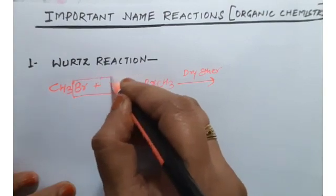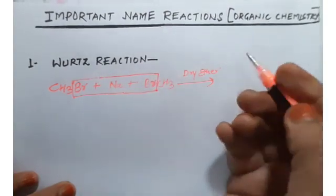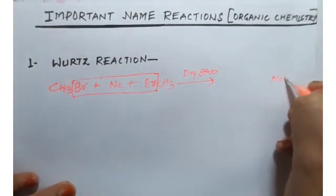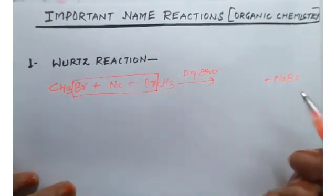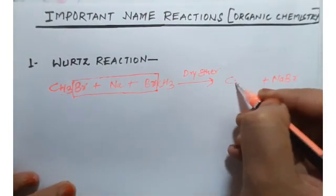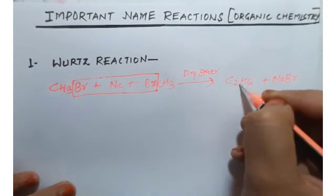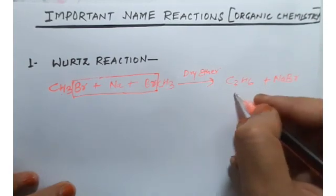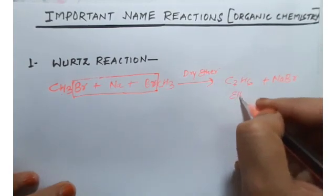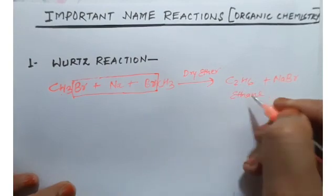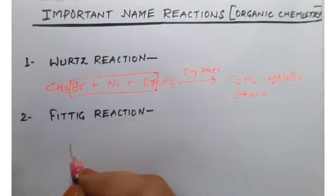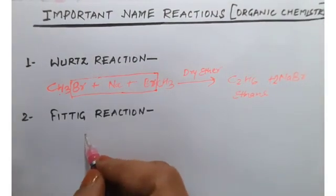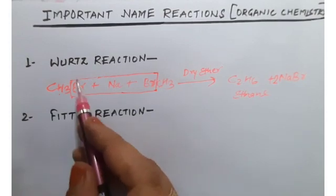For example, CH3Br reacts with Na to give NaBr as byproduct and CH3CH3, i.e., C2H6 ethane, the hydrocarbon is formed. So this is Wurtz reaction — a very short method. Next is Fittig reaction, which is a modification of Wurtz reaction.